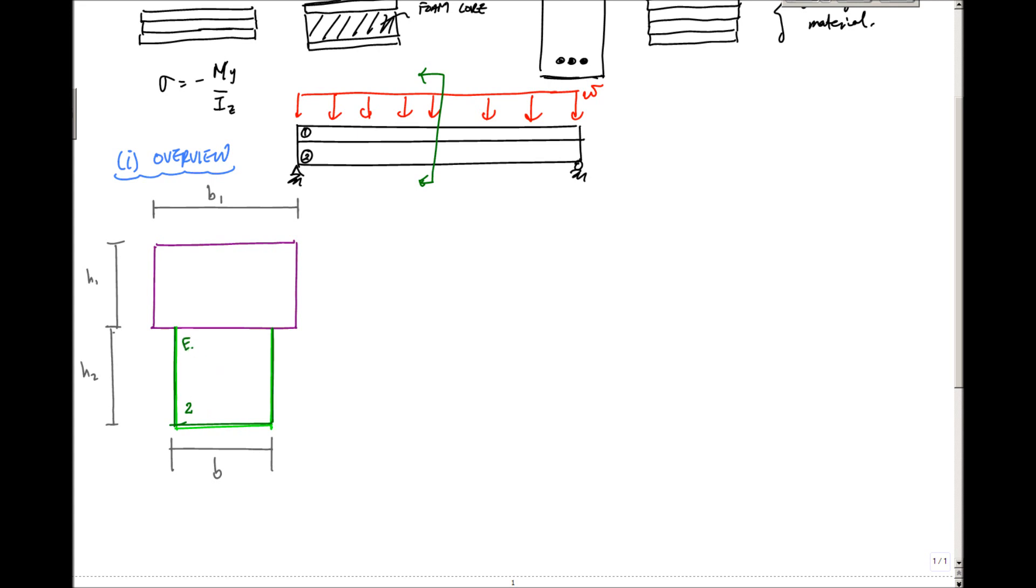This is material two. It's got modulus of elasticity E2. And this is material one with modulus of elasticity E1. We'll say that E1, or material one, is stiffer than material two. So it would be like this is steel, and for whatever reason this is concrete or wood or something, something you bonded together.